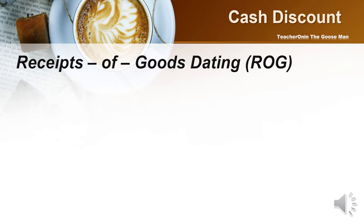The third type of cash discount is receipt of goods dating, or better known as ROG. It means that the discount and credit periods start on the day after the merchandise has been received. Receipt of goods dating is used when the transportation of goods takes a long time, possibly due to the distance at which the goods are being shipped.